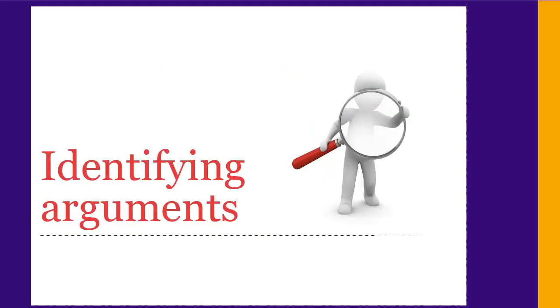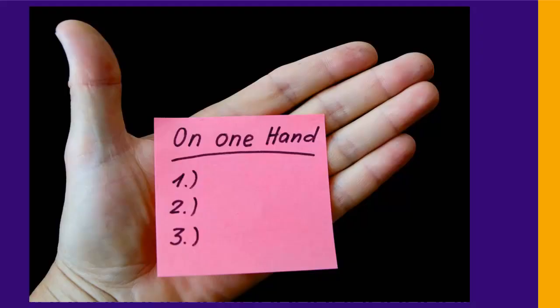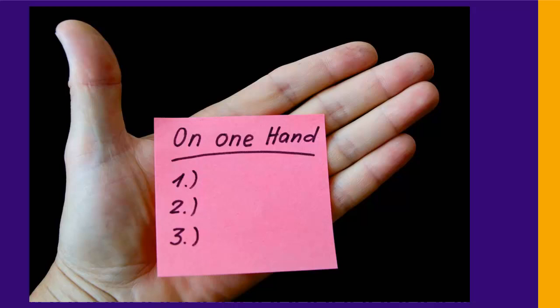Let's start with how to identify arguments. An argument is a formal way to make a point in academic writing. When reading, you'll need to identify arguments to properly understand the main points the author is making. There are two ways you usually do this. First, in many paragraphs, there's a topic sentence that states the main claim or argument of the paragraph.